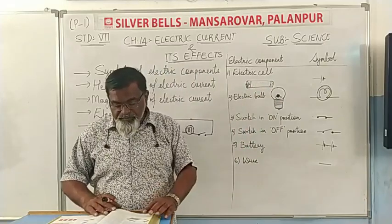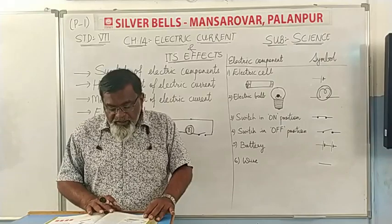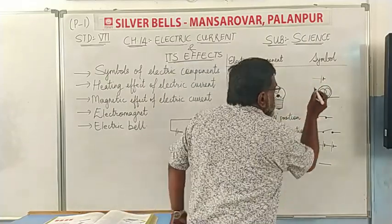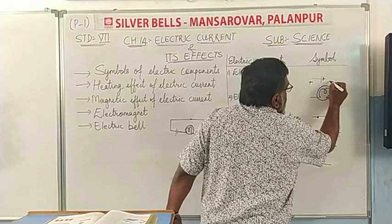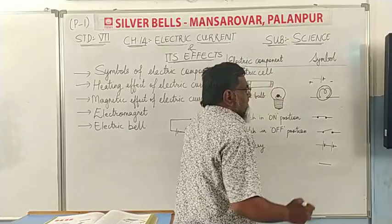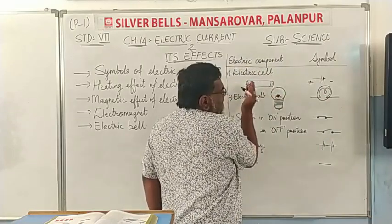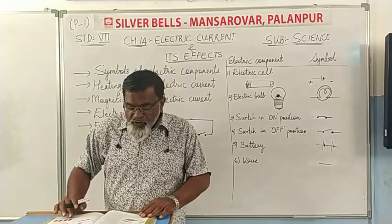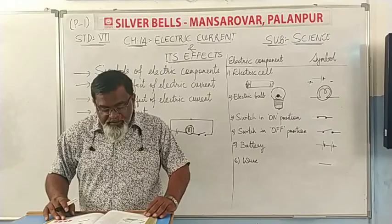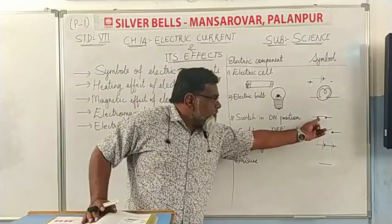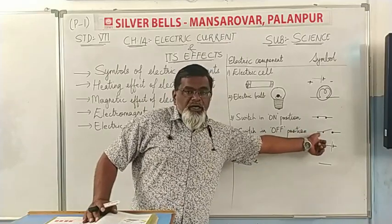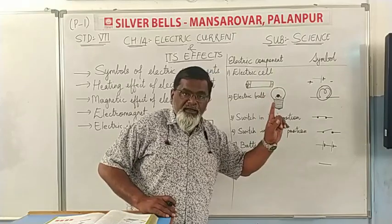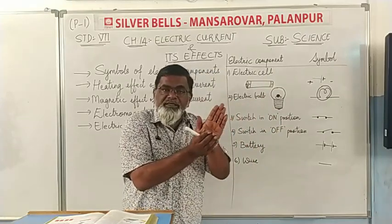In the symbol of the electric cell, the longer line represents the positive terminal, and the shorter, thicker line represents the negative terminal. For a switch, the on position and the off position are represented by different symbols. When it is in the off position, the two ends of the circuit are incomplete — that means the circuit is open and the switch is off.